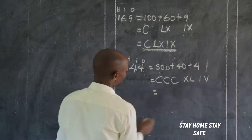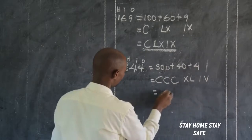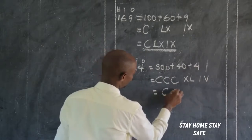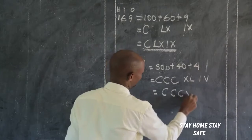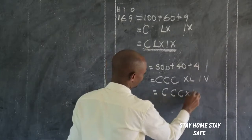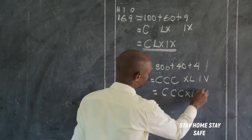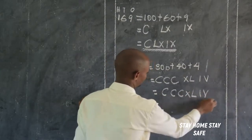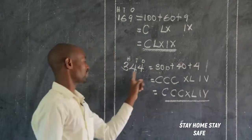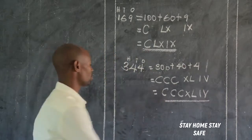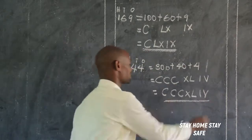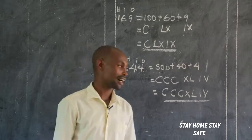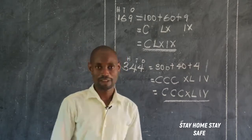Bringing this together gives C, C, C, X, L, I, V. Therefore, 344 gives us CCCXLIV as our answer.